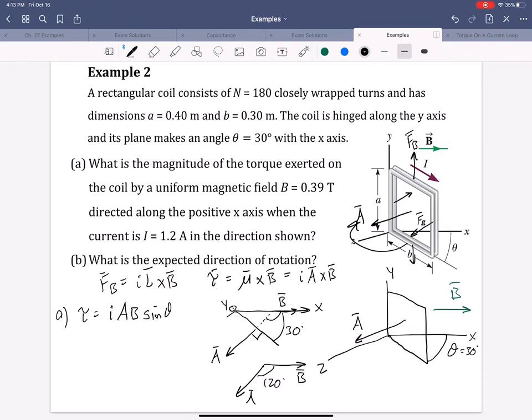You may have noticed by now that it doesn't have just one loop around this rectangular loop. There's actually 180 closely wrapped turns, which is why, imagine that there are 180 loops, all connected with the current traveling in the same direction. So we need to multiply this torque, which was just for one loop, times 180.